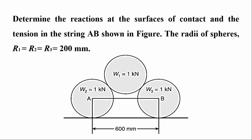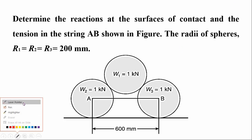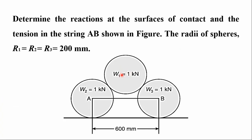In the previous class we solved two problems on two spheres. Now we will solve problems on three spheres. In this equation, three spheres are given: sphere number one, sphere number two, and sphere number three. The weight of all three spheres is one kilonewton. Spheres number two and three are connected by a cable AB, and the length of this cable is 600 mm.